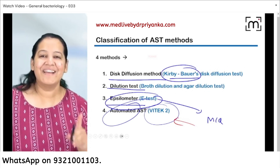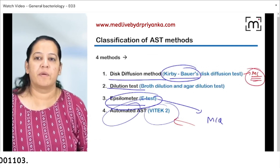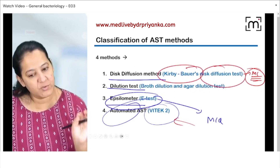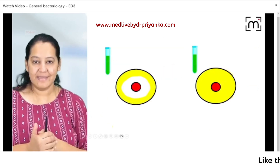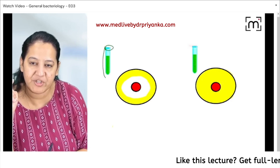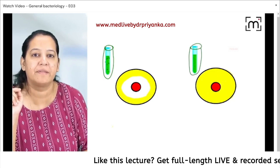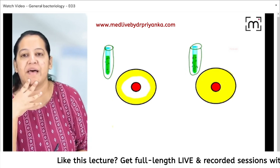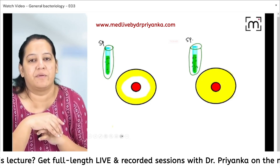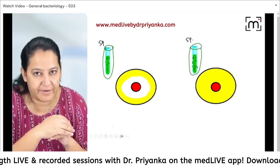Let's start with the first method: Kirby-Bauer disc diffusion method. Among them, this is the most common method. This is my patient sample taken out of the body — it contains bacteria. You can see the dots — it's a bacterial suspension. The sample can be blood, urine, stool, CSF, saliva — whatever it is, the point is that it contains bacteria. Now I will take agar plates — this is Mueller-Hinton agar (MHA), a sort of basic agar — which contains nutrition for the bacteria.